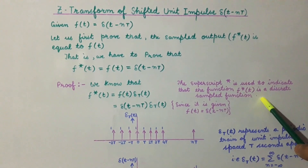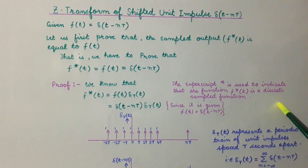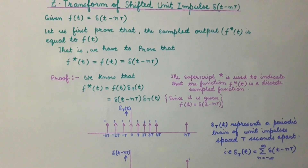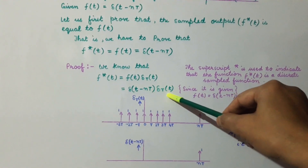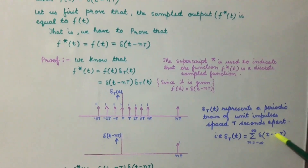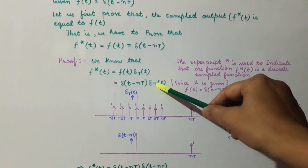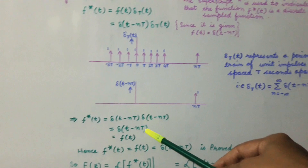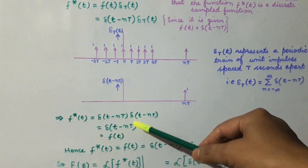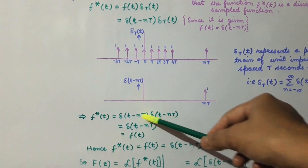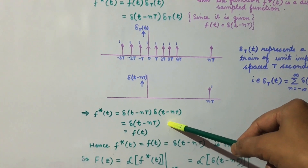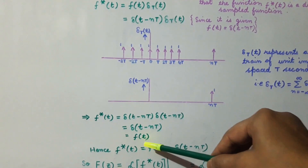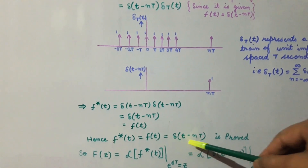Now delta(t - nT) is equal to delta(t - nT), so we substitute the value of δ_T(t) as delta(t - nT). We get f*(t) = delta(t - nT) · delta(t - nT), which again equals delta(t - nT). Since delta(t - nT) is equal to f(t), we have proved that f*(t) is equal to f(t), which equals delta(t - nT).